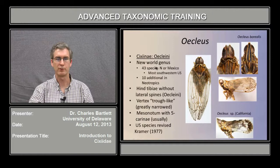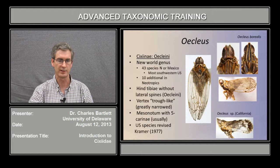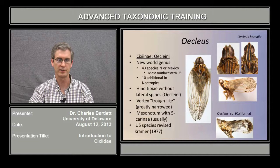The tribe Eucleus is distinguished from the other North American tribes by the absence of lateral spines on the hind tibia. Eucleus can be recognized by the vertex, which is trough-like and very narrow. There are usually 5 charine on the mesonotum, which separates them from the genus Heplaxeus. The genus Eucleus is very diverse in the southwest United States, where there are 43 species, plus an additional 10 in the Neotropics.